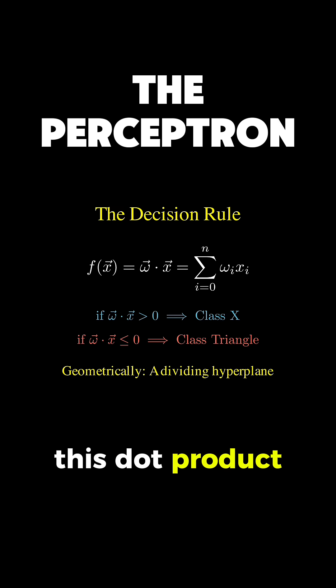Geometrically, this dot product defines a line in 2D space that splits our plane in two.